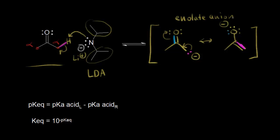For our two resonance structures, we have one with the negative charge on the carbon — that's our carbanion — and one with the negative charge on our oxygen — that's our oxyanion. The oxyanion contributes more to the overall hybrid because oxygen is more electronegative than carbon, so that's our enolate anion that is formed.